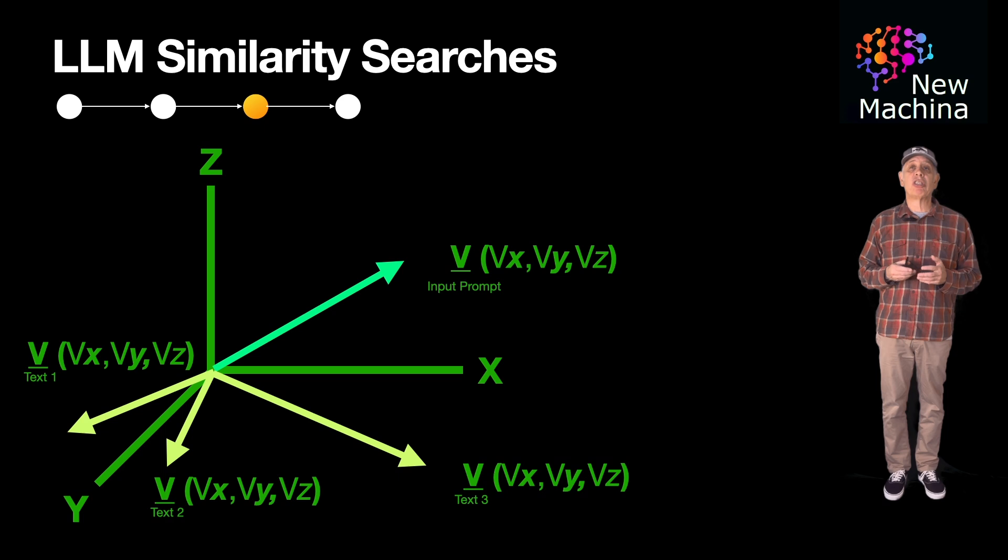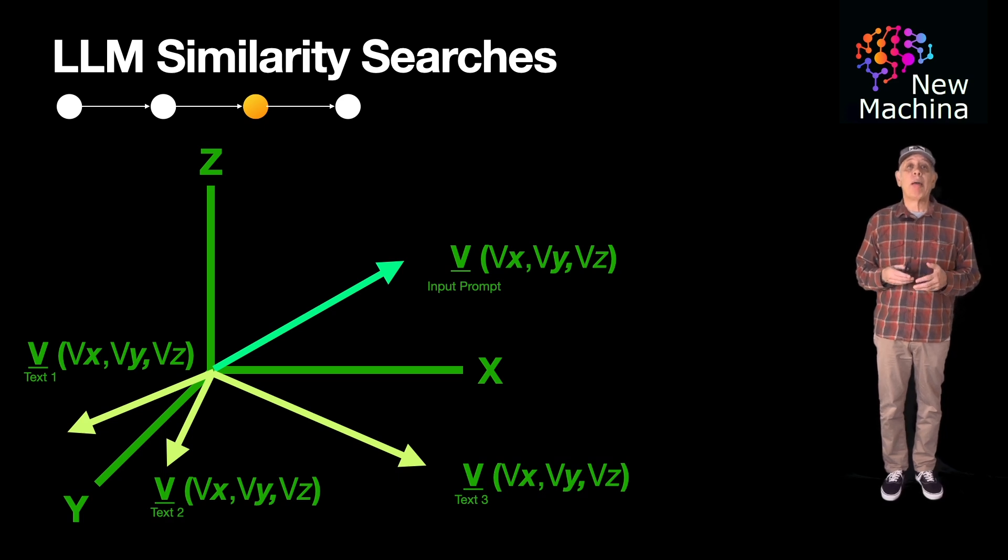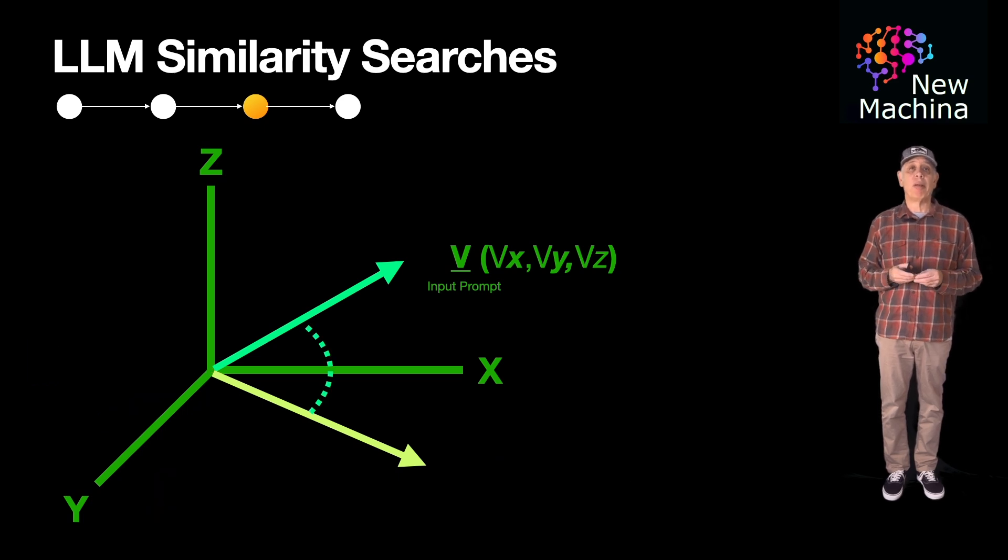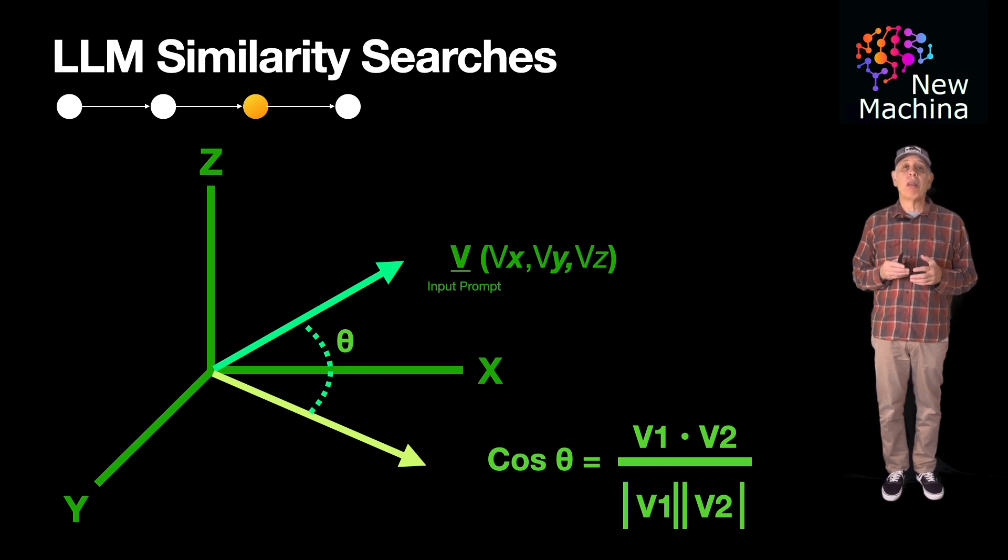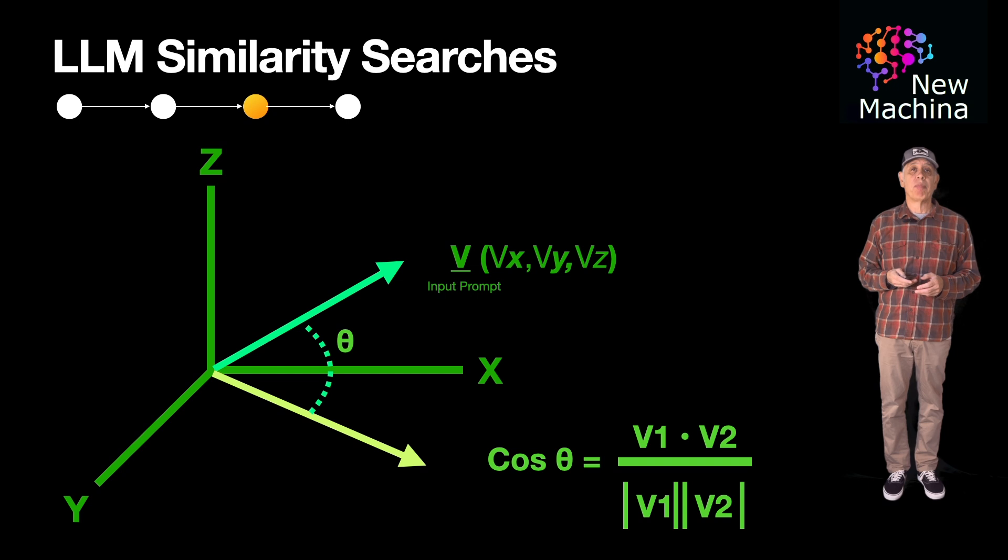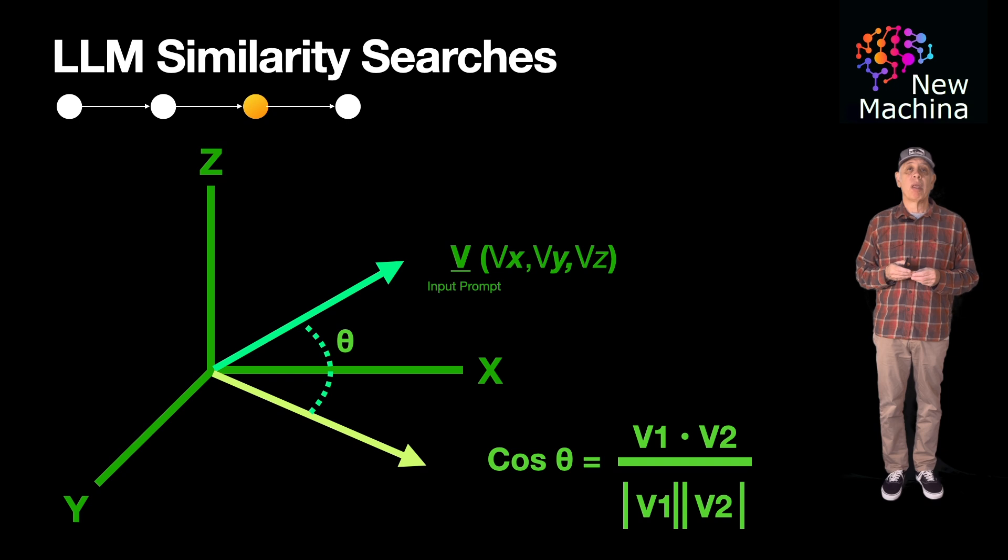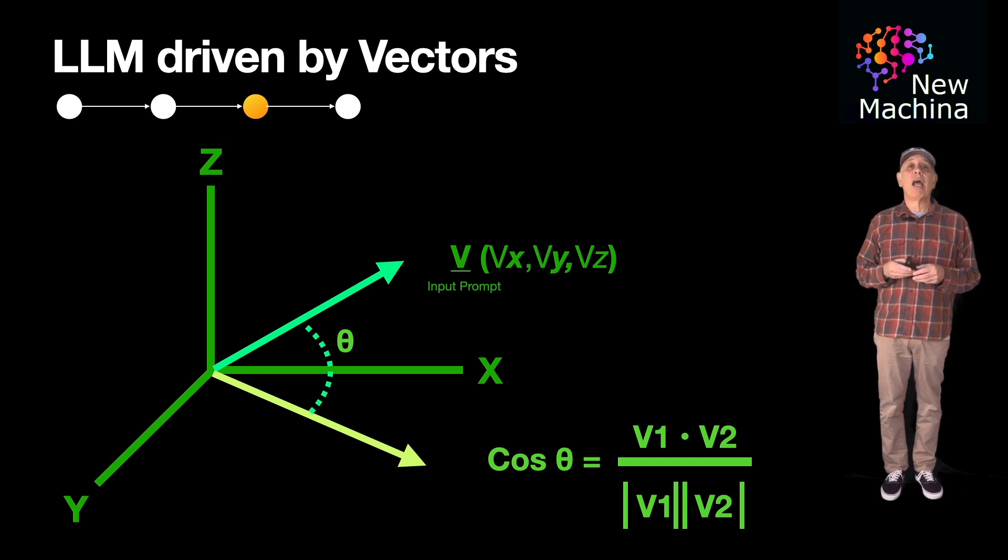It turns out there are a number of different similarity algorithms the LLM can use, but in this example, I will show one which is called cosine similarity. You can see the vector for the input prompt and you can see one of the vectors from one of the documents in the store. Cosine similarity measures the angle between the two vectors. The equation is shown as cosine theta equals the dot product of the vectors divided by the product of both vectors' magnitudes.